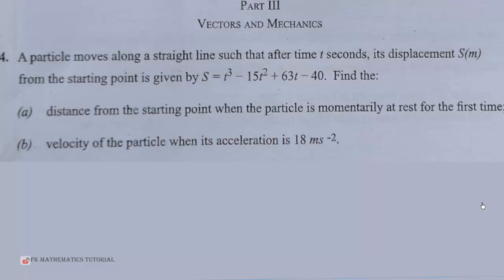Velocity of the particle when its acceleration is 18 meters per second squared. So, to do that, we have to differentiate the s, the displacement, in order to get the velocity. So, this is the velocity function.